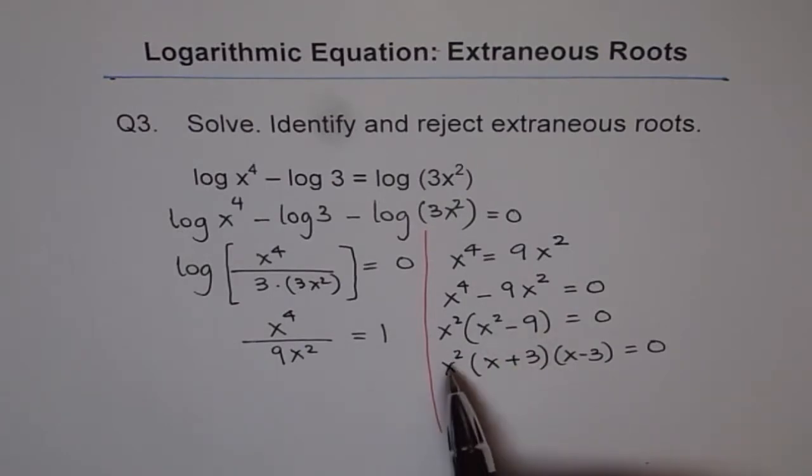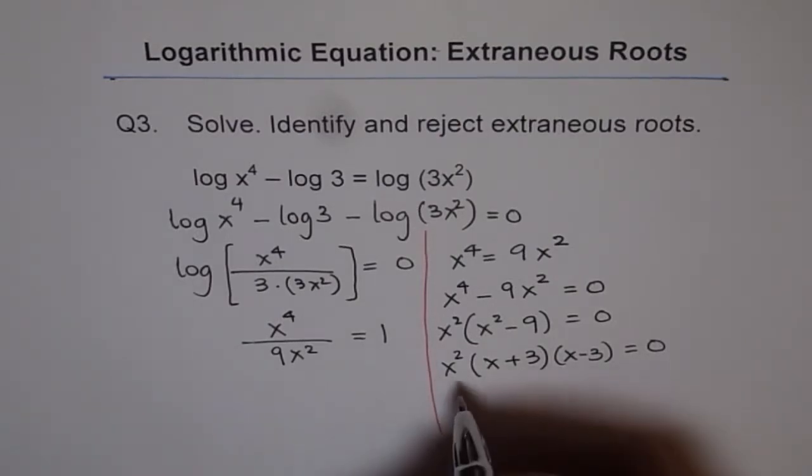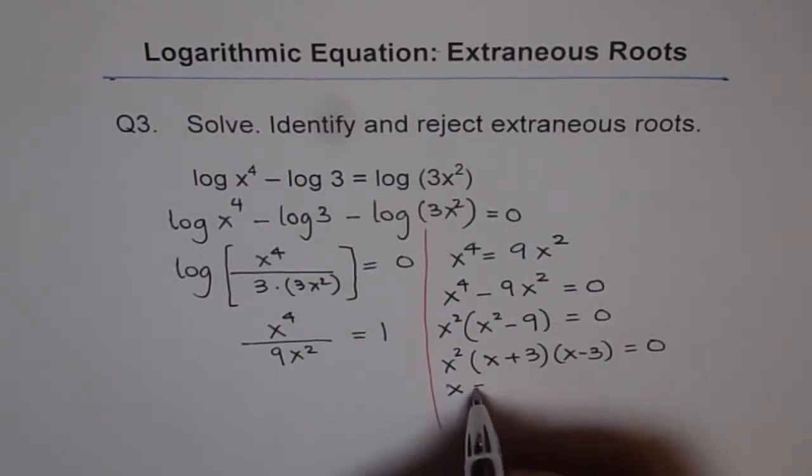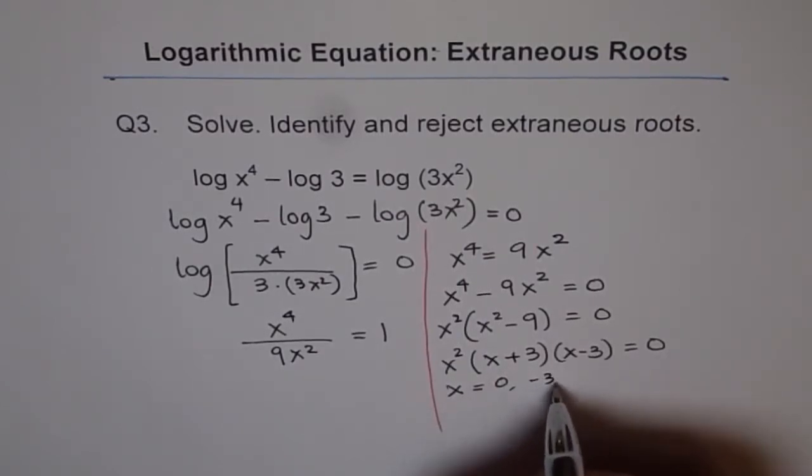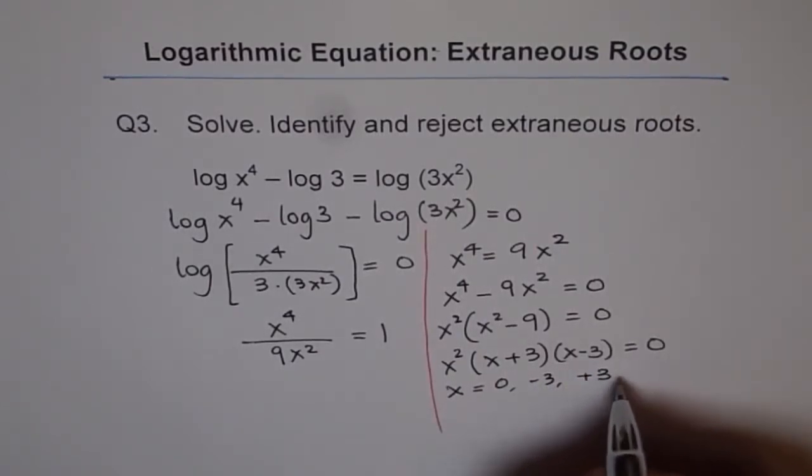See, if you cancel x squared, you will not get x equals to 0 as one of the solutions. So now we can write down the possible solutions. So the possible solutions are x is equal to 0, minus 3 or plus 3.